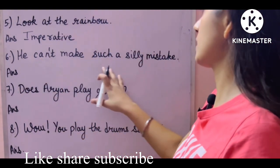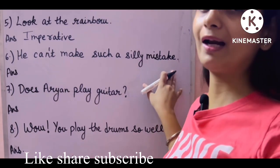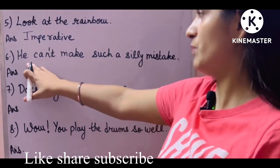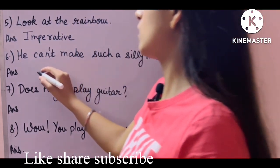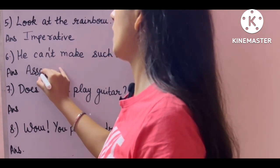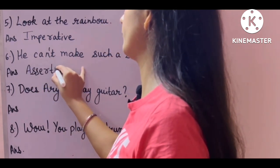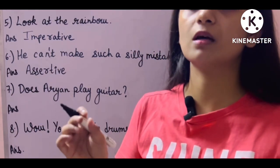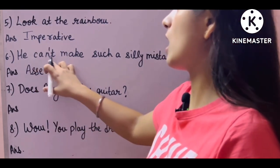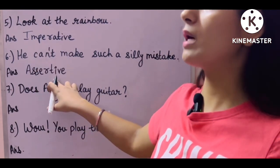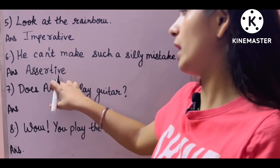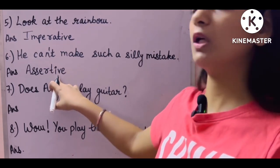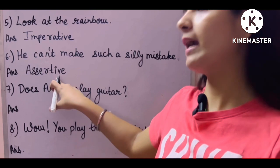Next: 'He can't make such a silly mistake.' Here we are making a statement — this is your assertive sentence. Now we talk about whether it is positive/affirmative or negative. Here we are saying it is negative. We always see 'not' in negative sentences — 'can't' means 'cannot.' So if someone asks, this is assertive, but is it affirmative or negative? This will be a negative assertive sentence.